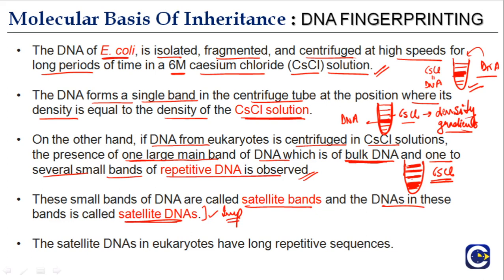These small bands of repetitive sequences are called satellite bands, and the DNA in these bands is called satellite DNA. Satellite DNA in eukaryotes consists of long repetitive sequences. This is important and you must know this.